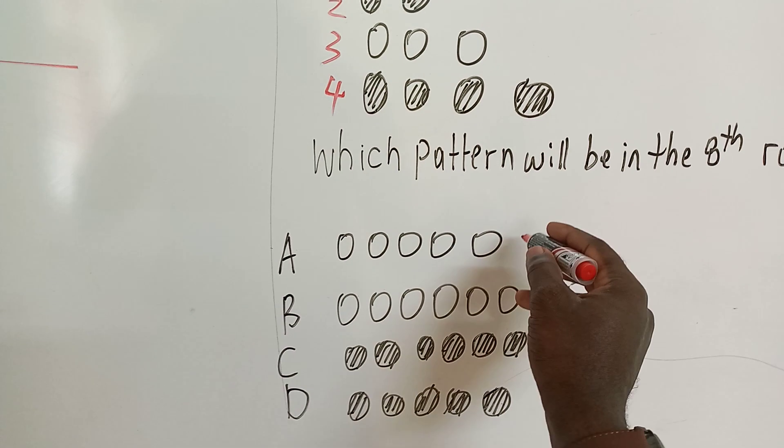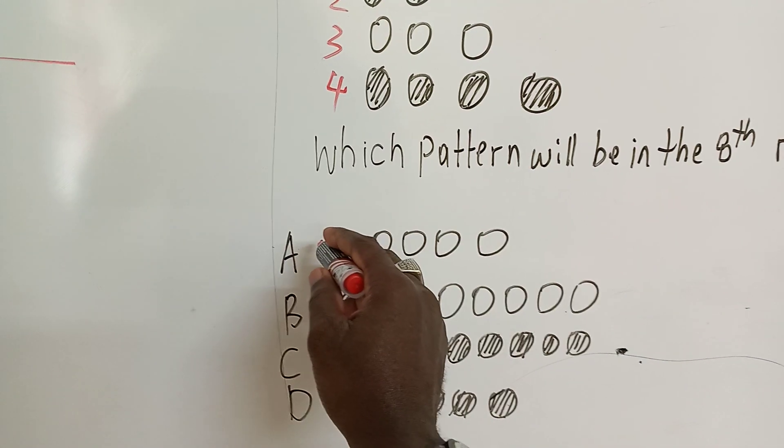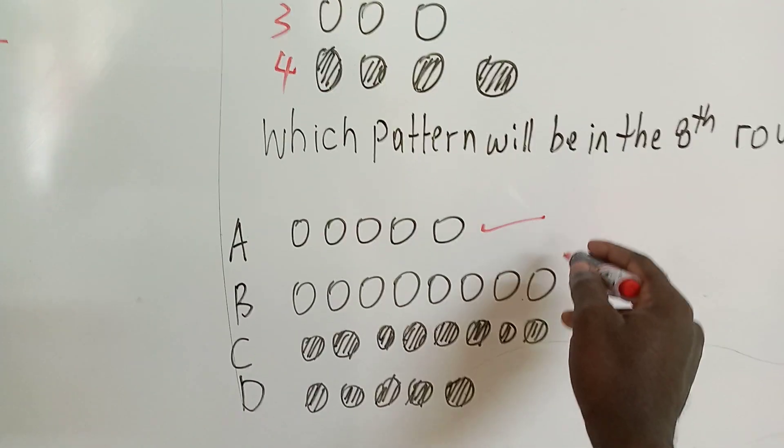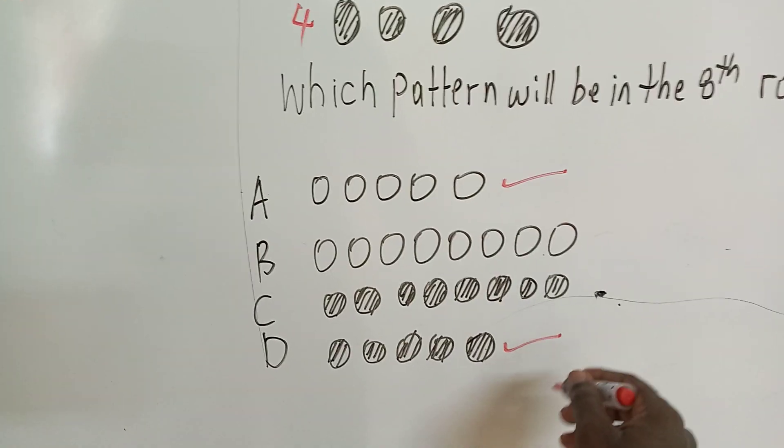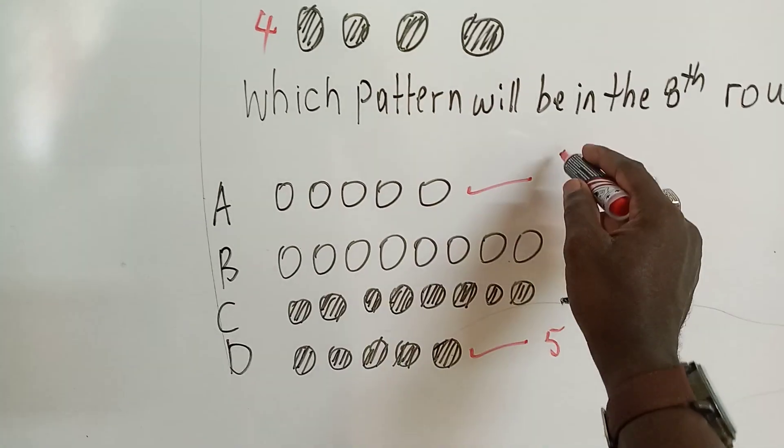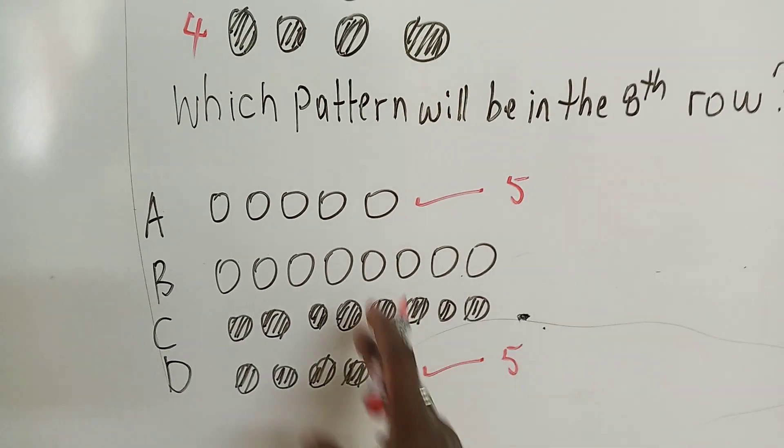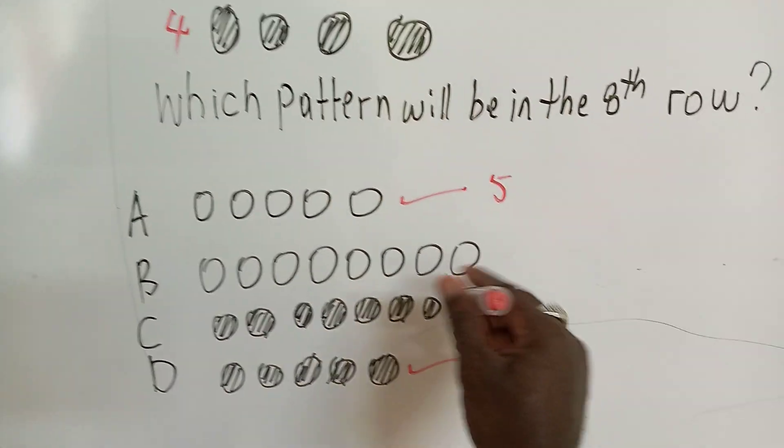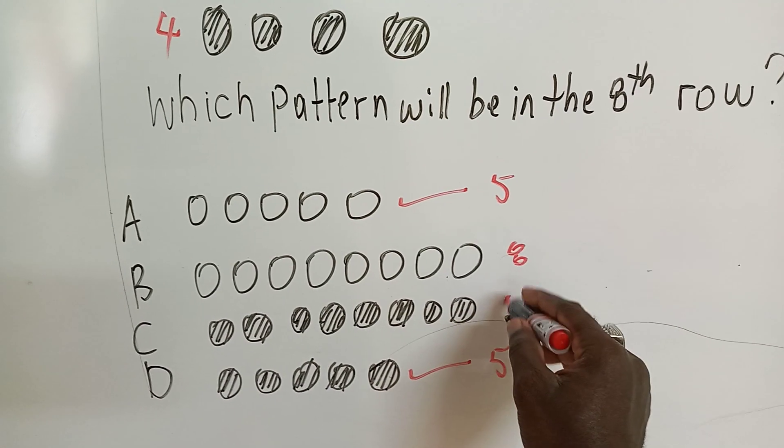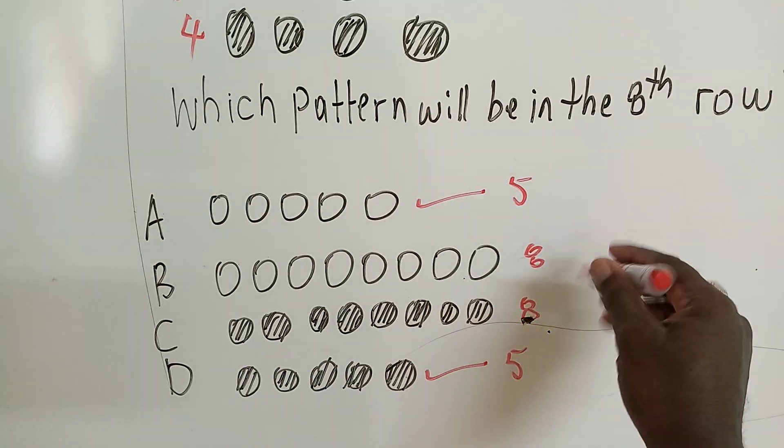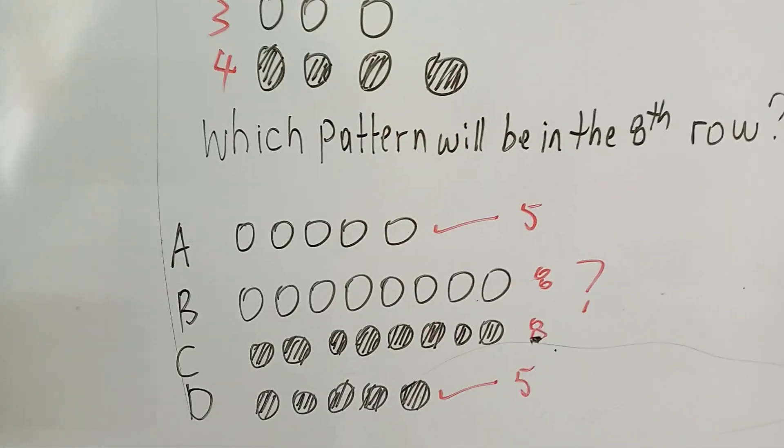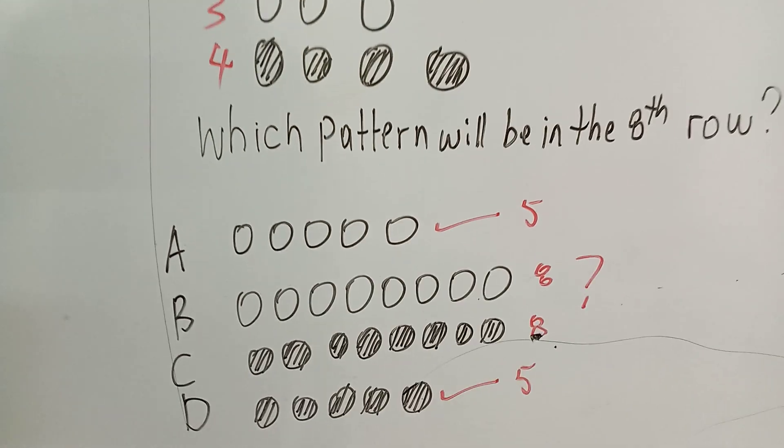So do your elimination. Get rid of this. Get rid of that. And get rid of that. Because these are five balls. Get rid of those. Eliminate those. So you're narrowed down to two now. Eight balls are here. Eight balls are here. Then you want to find which of these two is going to be your answer.